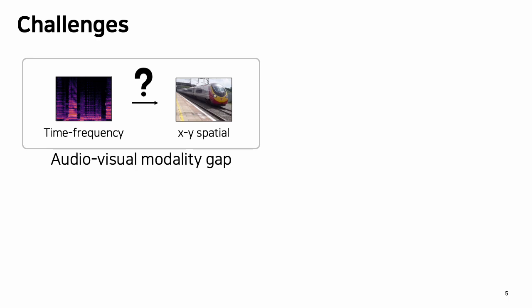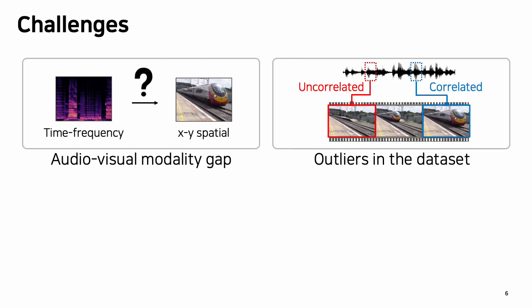Now let's dive into the challenges of sound-to-image generation. The first challenge is the modality gap between two different signals. Even though both audio and visual signals can be represented as 2D spatial images, there still exists ambiguity when mapping from audio to image because each axis represents different information. The second challenge is the presence of outlier audio-visual pairs in the dataset, which can disturb model training, since randomly selected audio-visual pairs from video cannot be guaranteed to always be correlated.